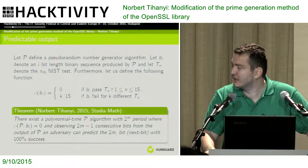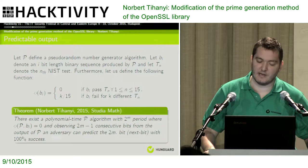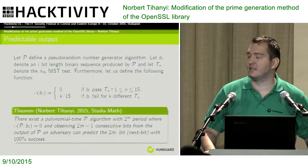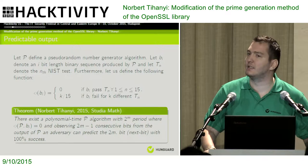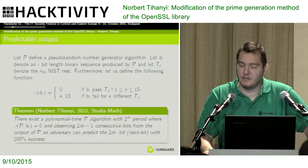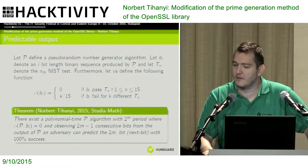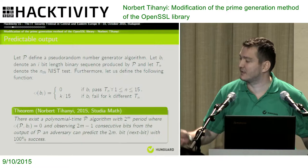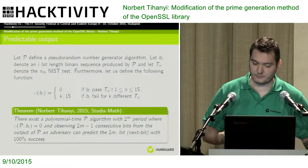As you can see in the slide, let P define a pseudo-random number generator and let b_i denote an i-bit length binary sequence. Define the function phi(b_i). There exists a polynomial-time P algorithm with 2^m periods such that phi(P, b_i) equals zero. It means that by observing only 2m minus one consecutive bits from the output of the pseudo-random number generator, it is possible to predict the next bit with 100% success. It's very important — the next bit, with 100% success. So it's straightforward to create such an algorithm.